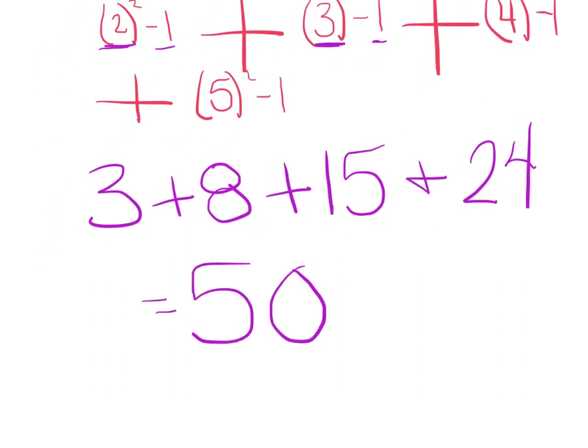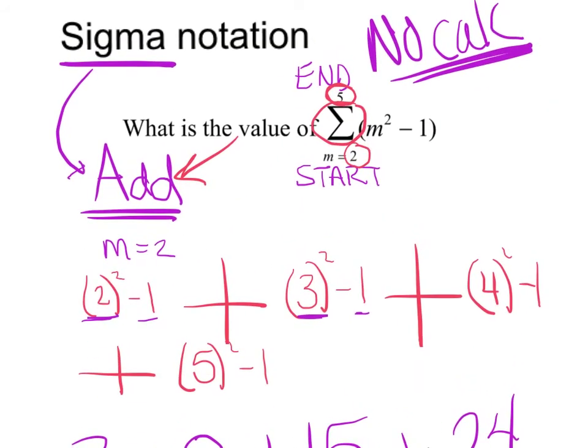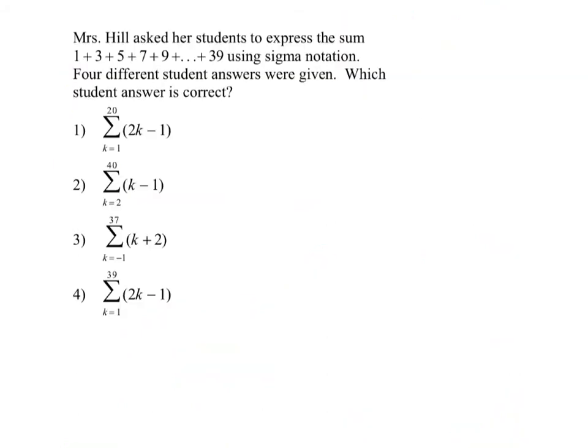So notice it wasn't difficult whatsoever. And again, a lot of you have the new updated calculator where it's easy to cheat, but we have to show work in this non-calculator section. Let's try a few others. Here's a great multiple choice question. Mrs. Hill asked her students to express the sum of 1 plus 3 plus 5 plus 7 plus 9 up to 39 using sigma notation. Four different student answers are given, which is correct.